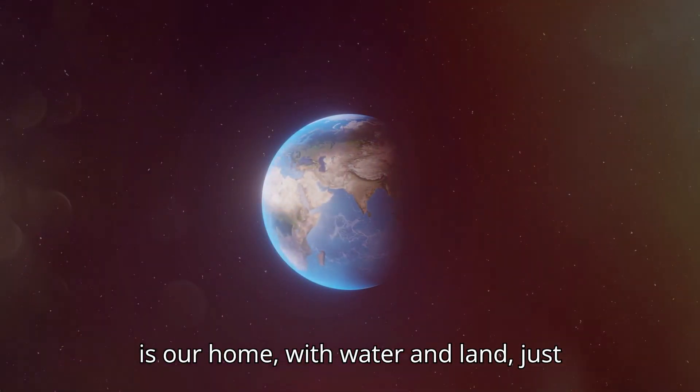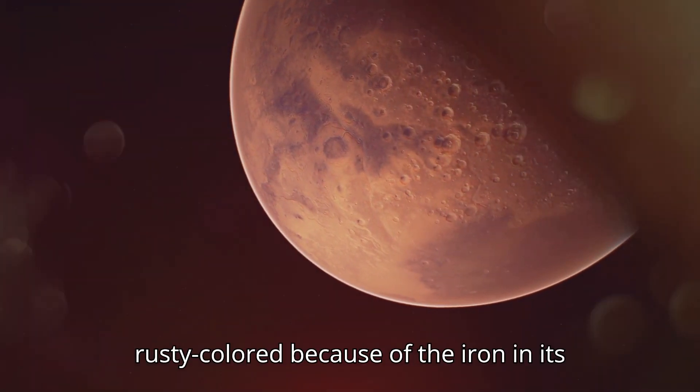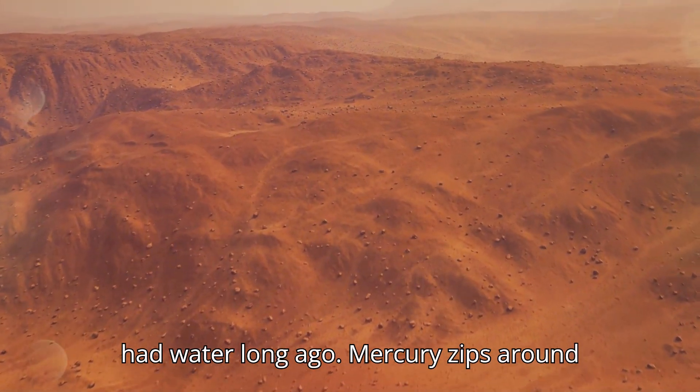Earth is our home, with water and land, just right for life. Mars is the red planet, rusty colored because of the iron in its soil. Scientists think Mars might have had water long ago.